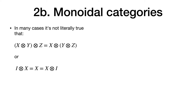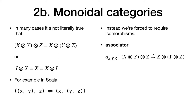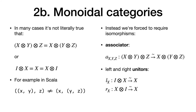Unfortunately, in many situations the monoidal laws of associativity and identity element are not strictly satisfied. For example, in Scala, a tuple associated left and a tuple associated right have different types, even though they're clearly isomorphic. So instead we relax our conditions and require isomorphisms between the two ways of associating the tensor product. This isomorphism is called the associator and depends on three objects. We also need the left and right unitors, which satisfy certain laws.